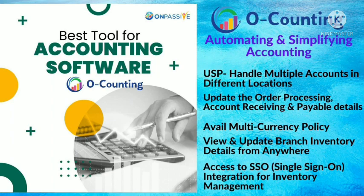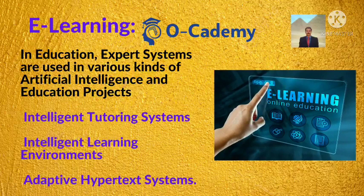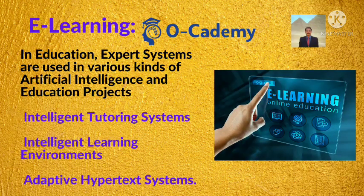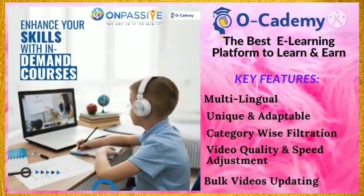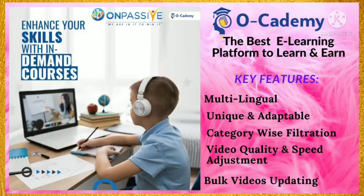Now I'll give the expert system applications in education — that is OnPassive Academy, an e-learning platform. In education, expert systems are used in various kinds of artificial intelligence and education projects, including intelligent tutoring systems, intelligent learning environments, and adaptive hypertext systems. OnPassive Academy is the best e-learning platform to learn and earn, powered by artificial intelligence. Students can learn and teach, and can earn by uploading videos or online tutoring.